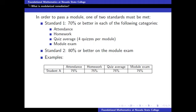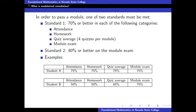For example, student A gets 75 percent across the board, the student will pass. Student B gets a 50 percent on homework and attendance, a 65 percent on the quiz average, and a 75 percent on the module exam. Even though the module exam is above 70 percent, the other categories are not, and so this student will not pass.